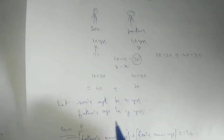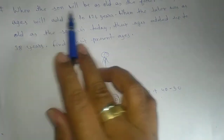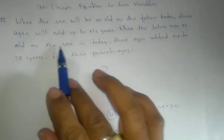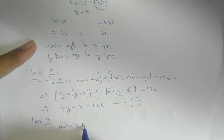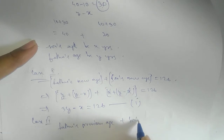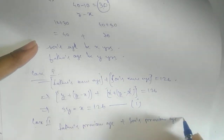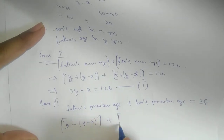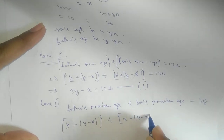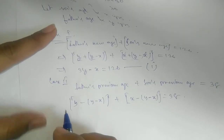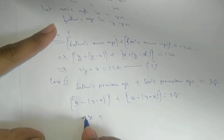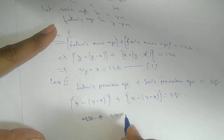Case 2: they are saying that when the father — here 'the letter' means father, since the first one is son and the second is father. When the father was as old as the son is today, the ages added up to 38. So father's previous age plus son's previous age equals 38. That gives us y − (y − x) + x − (y − x) = 38, simplifying to 3x − y = 38. This is equation number two.